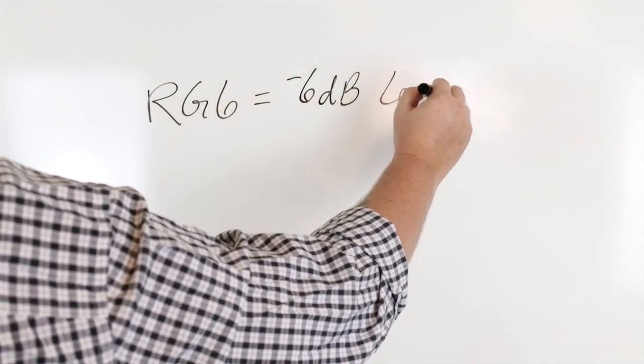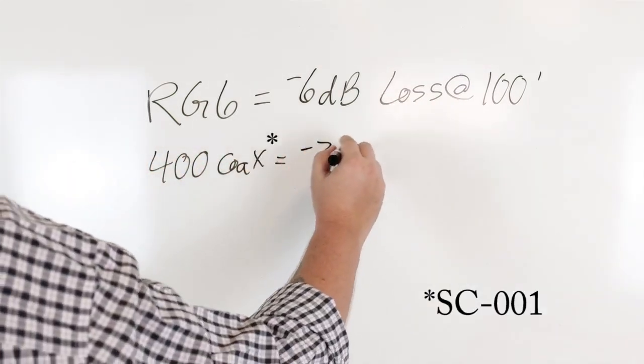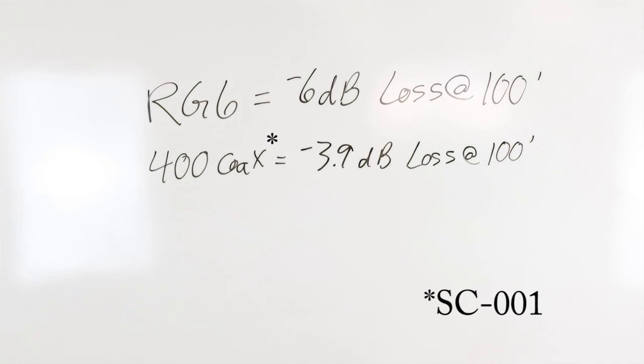Let's look at loss first. Take the cable you use for example. At 900 MHz, 100 feet of your standard RG6 type cable has 6 dB of loss, while the cable we use in SureCall boosters called 400 coaxial cable only has 3.9 dB of loss.